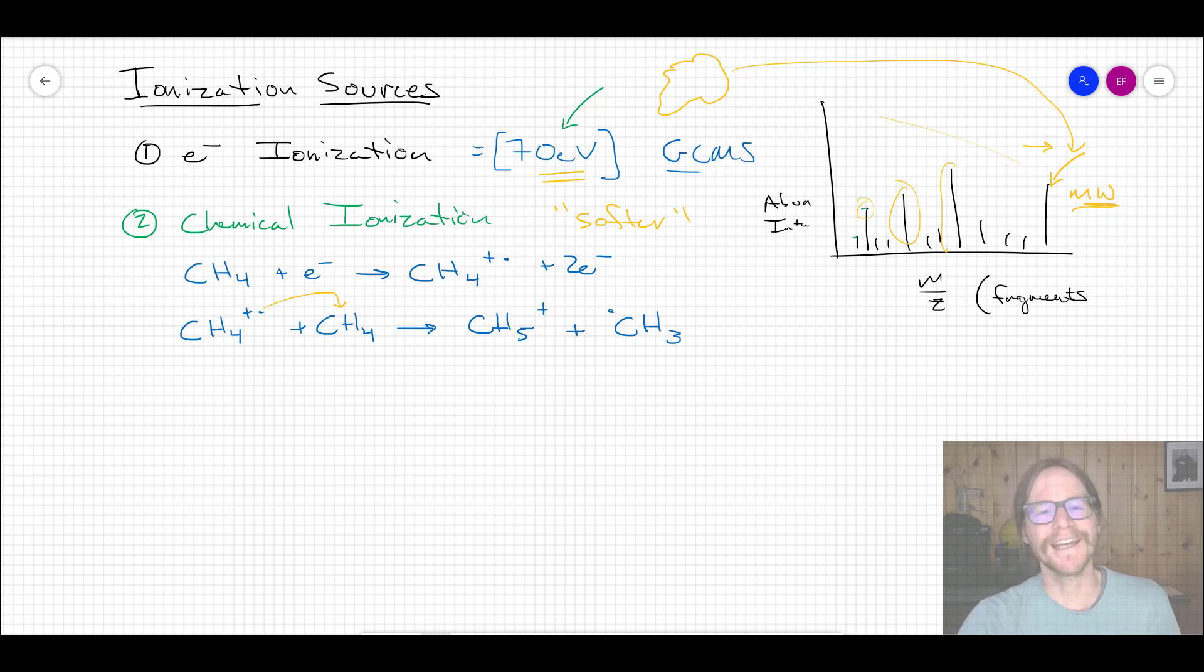So instead of just smashing it with a really intense electron beam, what we do is we generate an intermediate reactive chemical species, something that doesn't have quite that amount of energy, but something that is still going to augment both the charge and the potential fragmentation pattern of the system. And one way to do that is to create that reactive species.